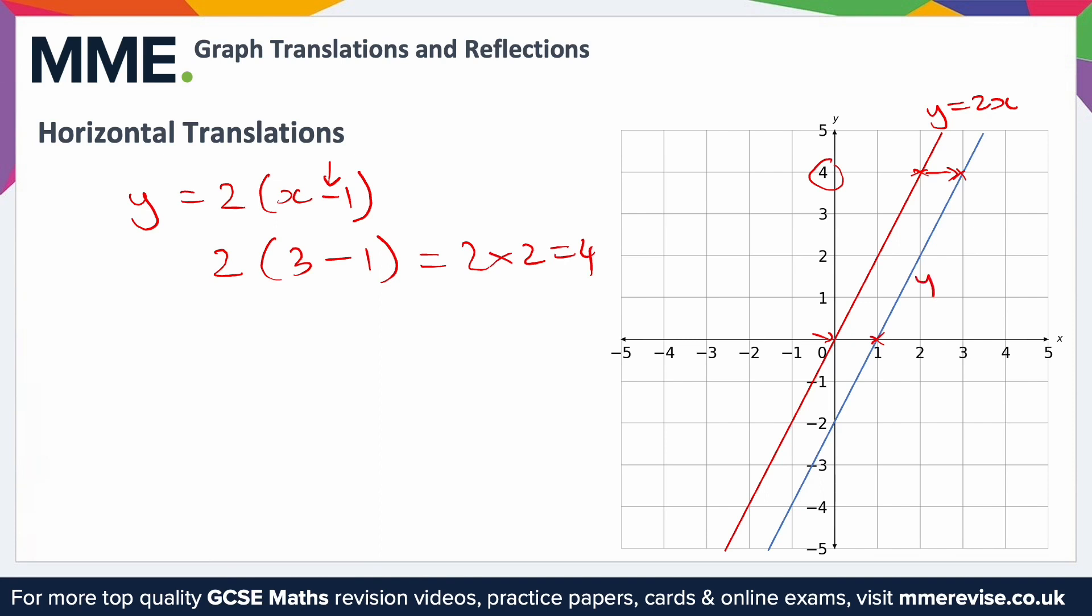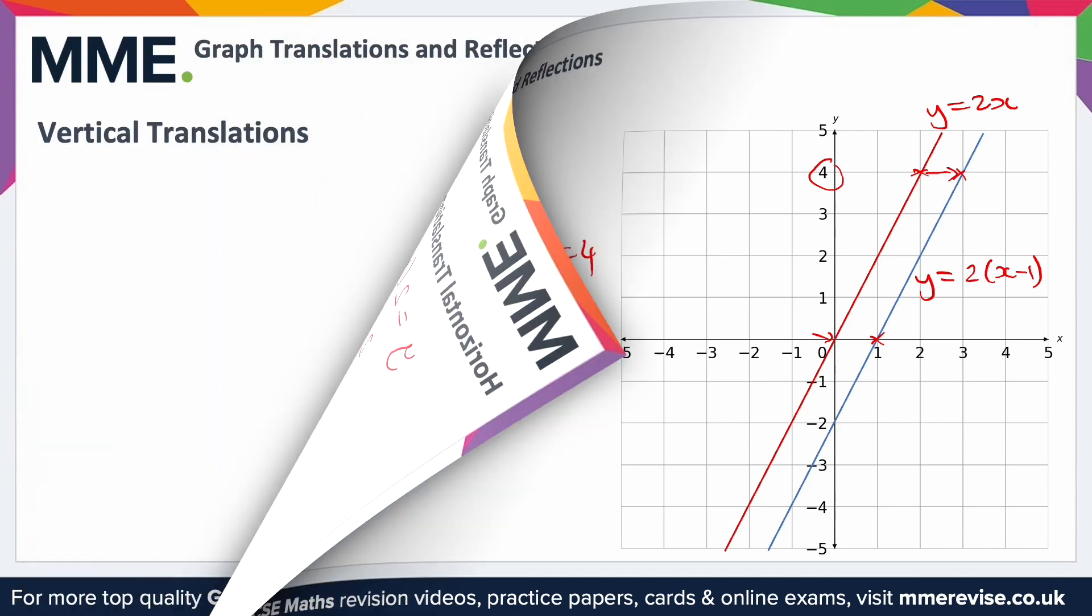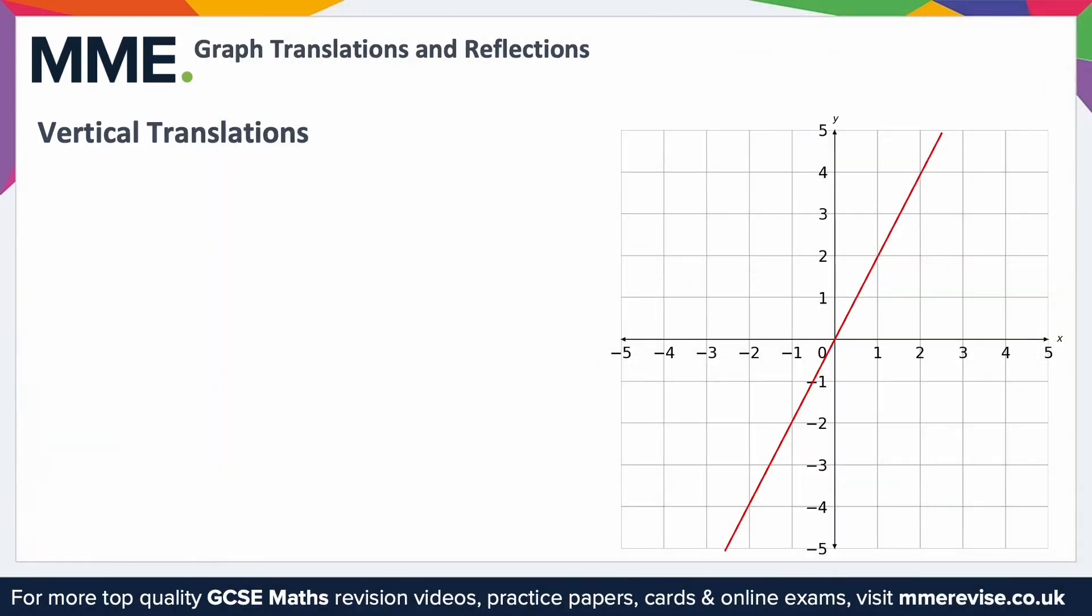Vertical translations move the graph up and down along the y-axis. To shift a graph up by one unit, here again we have y equals 2x. And again, if we pick an example point where x is 2, y is 4, here we now want to shift the graph up by 1.